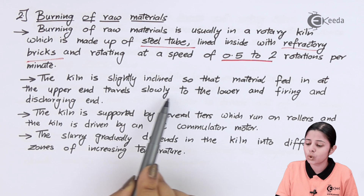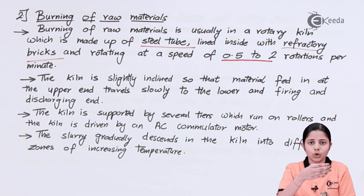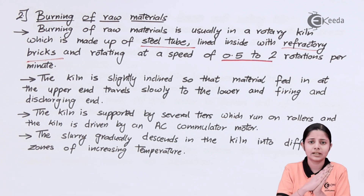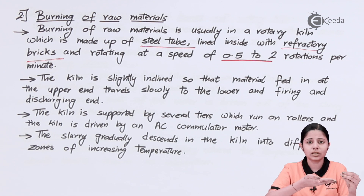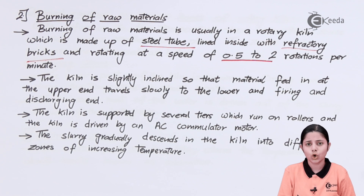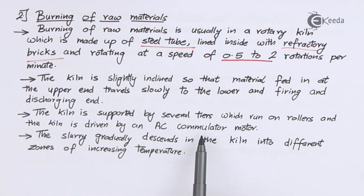The kiln is slightly inclined so that material fed at the upper end travels slowly to the lower end, with firing at the discharging end. If the kiln were vertical, material fed at the top would immediately fall out; if horizontal, it would never reach the discharge end. Therefore the kiln is inclined at a certain angle — neither vertical nor horizontal. The kiln is supported by several tires which run on rollers, and is driven by an AC motor.